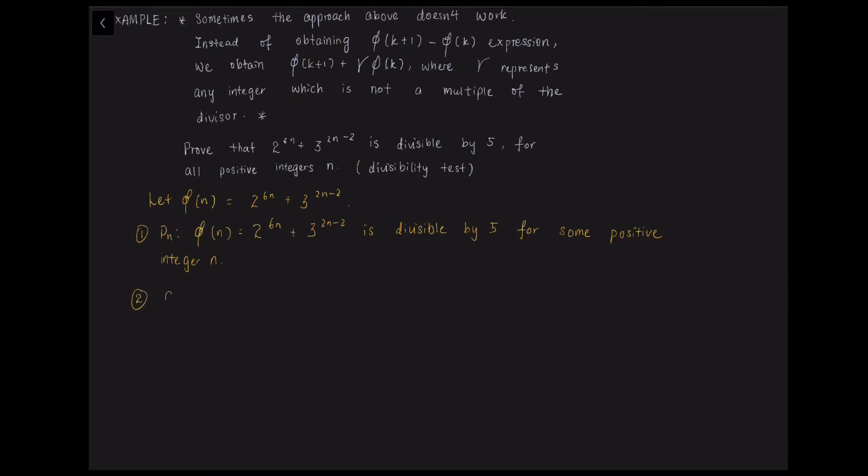Second step, proof p1. So let n equals to 1, phi 1 equals 2 to the power of 6 plus 3 to the power of 0, which is equal to 65. And 65 is divisible by 5, hence p1 is true.